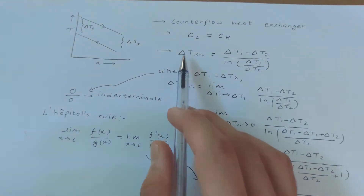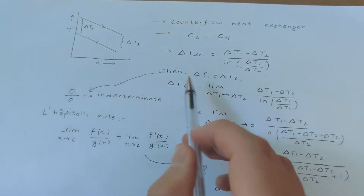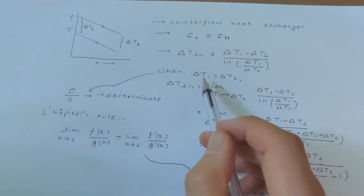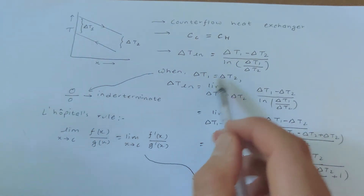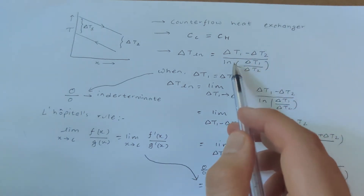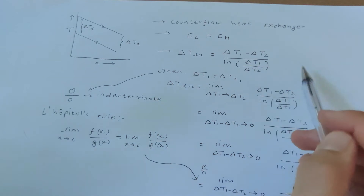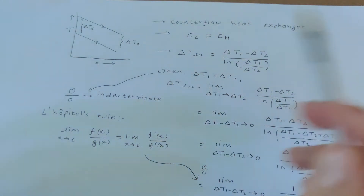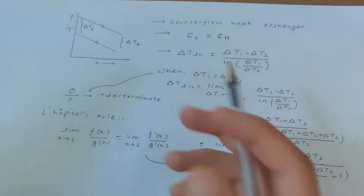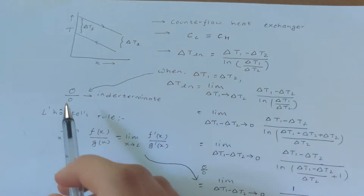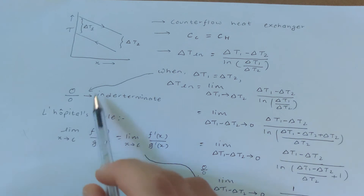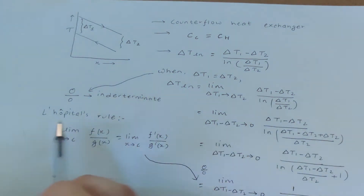Now let's see what happens to the logarithmic mean temperature when Delta T1 equals Delta T2. If I substitute Delta T1 equals Delta T2 into the LMTD formula, the numerator becomes zero and the denominator becomes ln(1), which is also zero. So we get zero divided by zero, which is called the indeterminate form.